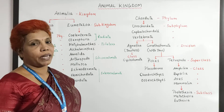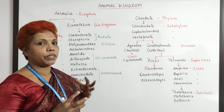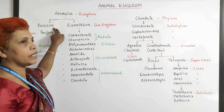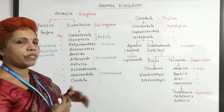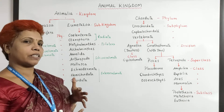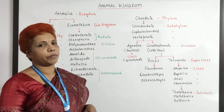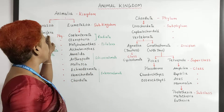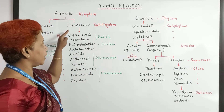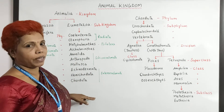Eumetazoa are true tissue-graded animals where the number of cells is increased. In Parazoa, cells are loosely placed and there is no tissue formation. So Porifera is the only one phylum under Parazoa. Under Eumetazoa you have 10 phylums.